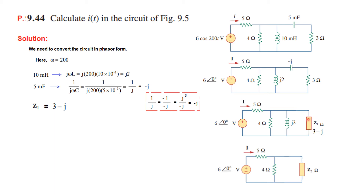These three elements are in parallel. Rather than solving all three together — which becomes complicated — we first solve two of them in parallel, call that Z2, and then solve those two in parallel.